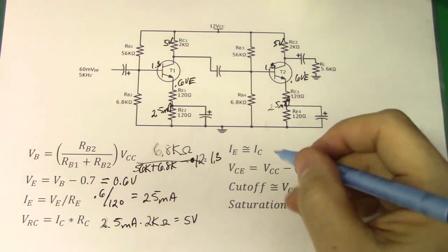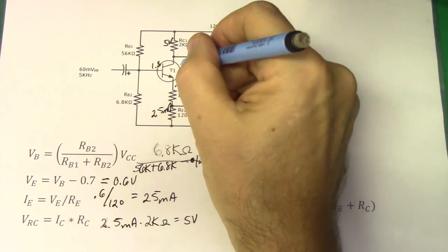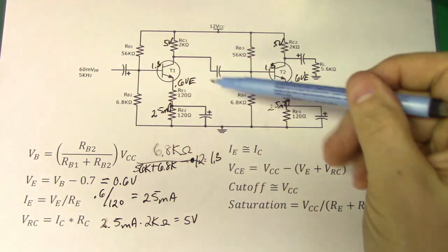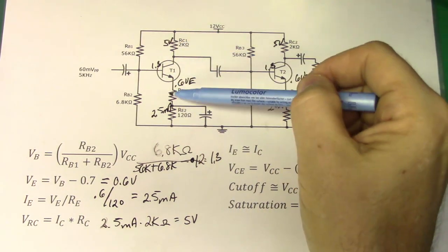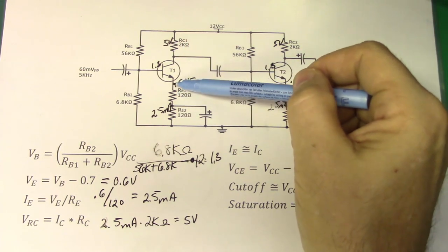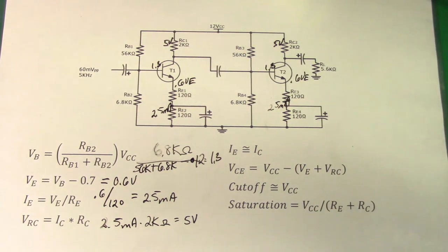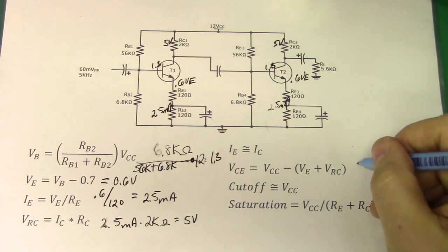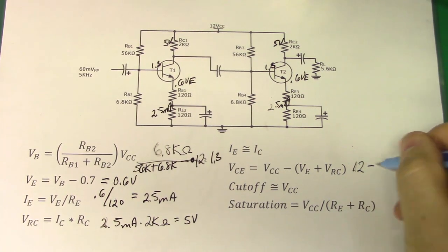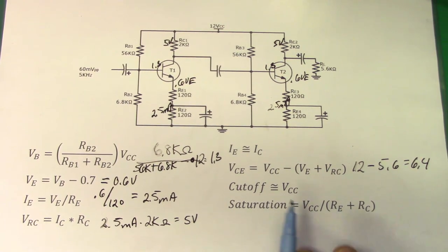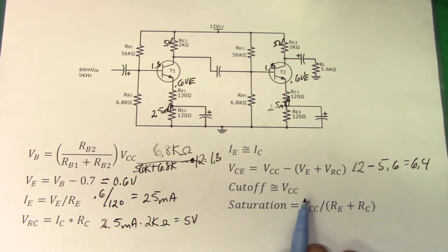To find VCE, remember we're interested in the voltage from collector to emitter. The only voltage remaining is what's left after the voltage drops on RC1, RE1, and RE2. We have 5 volts on RC and 0.6 volts on the emitter resistors. Taking the 12 volts and subtracting the total of these two voltages, we get a VCE of 6.4 volts. This is all for checking the load line and making sure everything is going to work out properly.